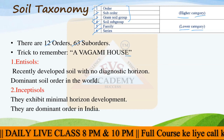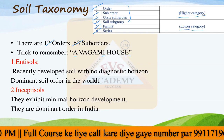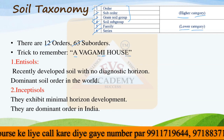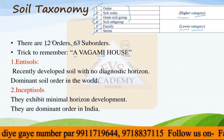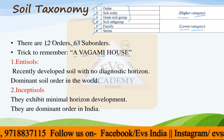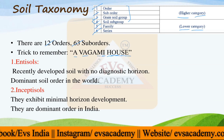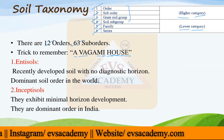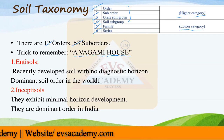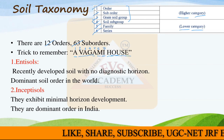From E there is Entisol. From I we have Inceptisol. Then A we have Aridisol. With M we have Mollisol. With S we have Histosol. Then again A denoting Alfisol. Then U is denoting Ultisol. O is denoting Oxisol. H is denoting Histosols. B is denoting Vertisols. Again A is denoting Andisol. And then G is for Gelisols. So the total 12 letters here are denoting all different types of soil orders.